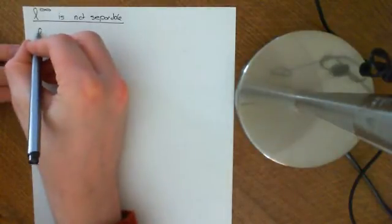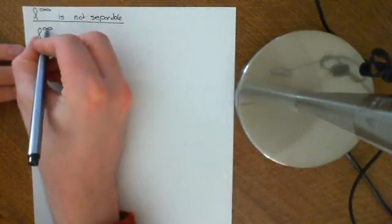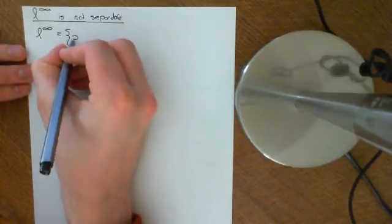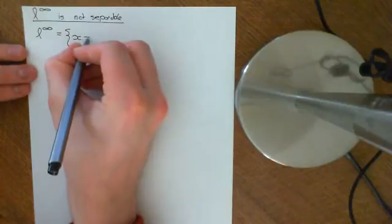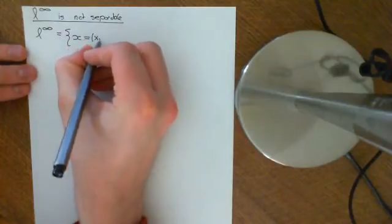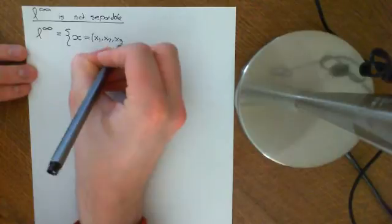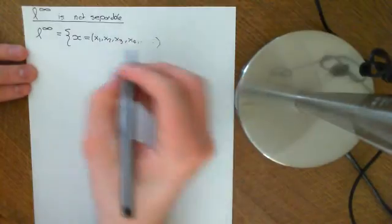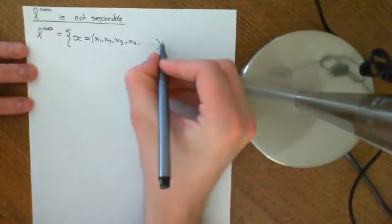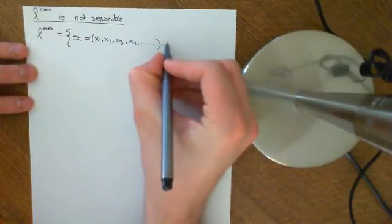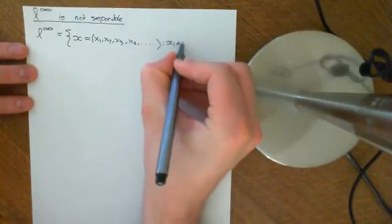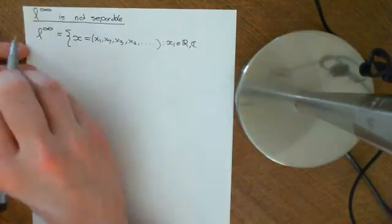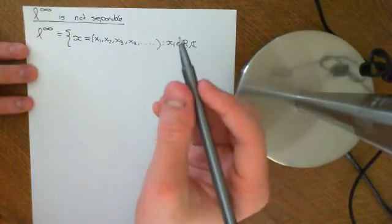L-infinity: firstly, the set underlying the metric space is the set of all sequences. Let's call the sequences x, which is a sequence x1, x2, x3, x4, and so on. So it's all infinite sequences such that the elements are either real or complex numbers, depending on whether you are talking about a real L-infinity space or a complex L-infinity space.